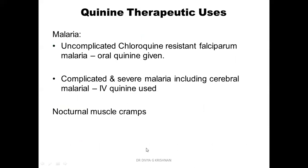The therapeutic uses of quinine are principally in malaria. It can be used in uncomplicated chloroquine-resistant falciparum malaria, where oral quinine is given. In cases of complicated and severe malaria, including cerebral malaria, IV quinine is given. Other than malaria, quinine can also be used for nocturnal muscle cramp treatment.